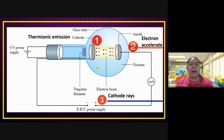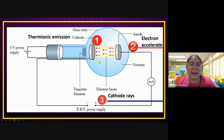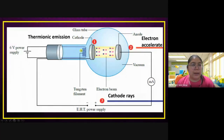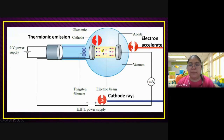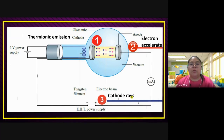This is one of the functions by using thermionic emission, then using the electron. Remember the part names. Part one is filament heating — produces thermionic emission. Part two: you talk about the anode. The electron will accelerate, go to the anode. Why? Because they have extra high tension — then they produce a cathode ray.